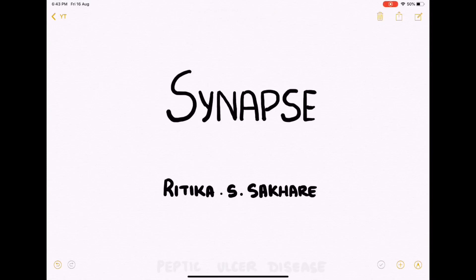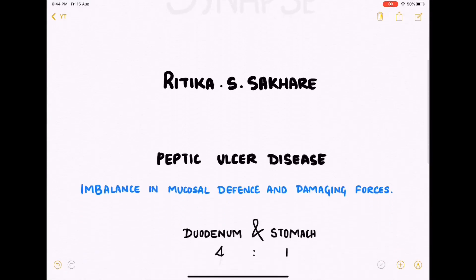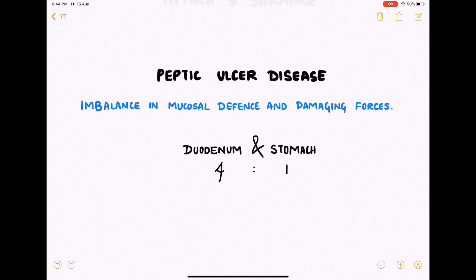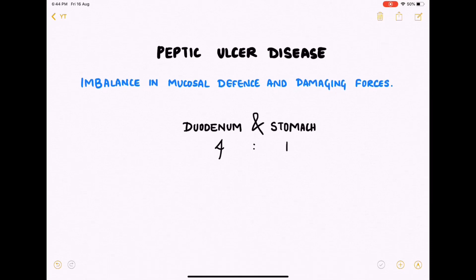Hey guys, welcome back to Cynabs. This is Rithika and today we'll talk about peptic ulcer disease. This is basically because of an imbalance in the mucosal defense and damaging forces. It can occur anywhere in the GI tract which is exposed to acid, but it is more common in the duodenum and stomach. It is four times more common in the duodenum than in the stomach.